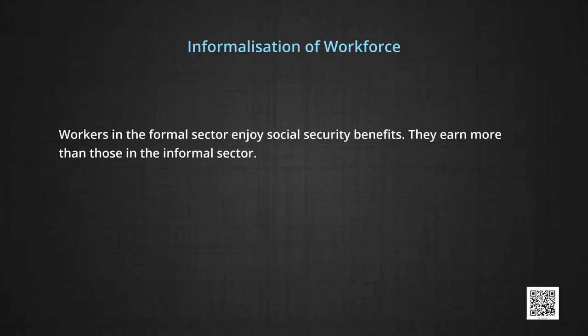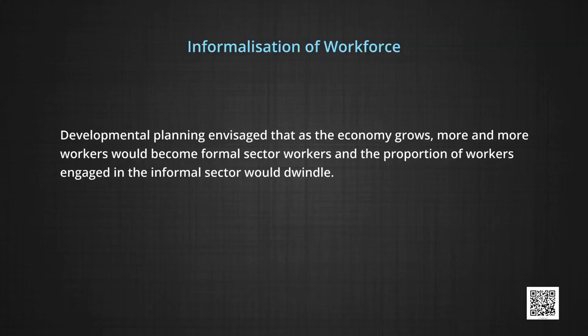Workers in the formal sector enjoy social security benefits and earn more than those in the informal sector. Developmental planning envisaged that as the economy grows, more workers would become formal sector workers. There are about 473 million workers in India, but only 30 million are in the formal sector. The percentage employed in the formal sector is just 6 percent, meaning the rest, 94 percent, are in the informal sector.